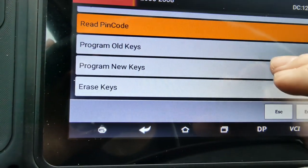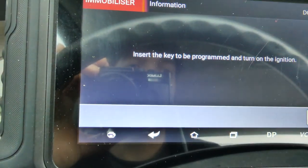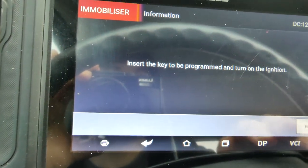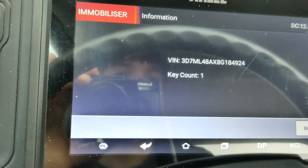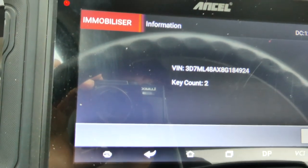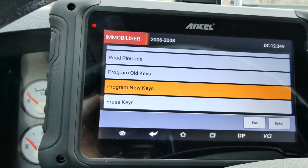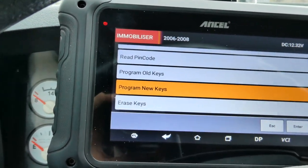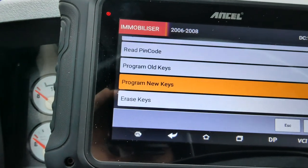All right, and now we're going to go program new key. And we have the key in here to do it with. Key count is one. We're going to hit enter. All right, and now it added that key. Pull the key out before we start it back because it has to reset.